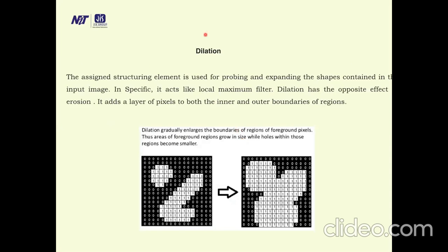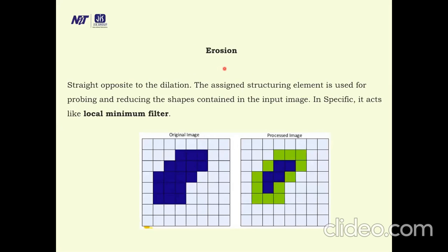Morphological operations process images based on shapes, applying a structuring element to an input image and creating an output image of the same size. One morphological operation is dilation: the assigned structuring element is used for probing and expanding the shapes contained in the input image — it acts like a local maximum filter. In the original image, after dilation the shape is maximized; when two lines are extended they merge, forming the final dilated image. The opposite of dilation is erosion: the structuring element is used for probing and reducing shapes via a local minimum filter, thinning the lines to produce the final processed image.